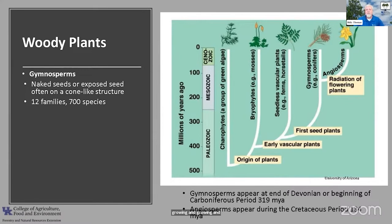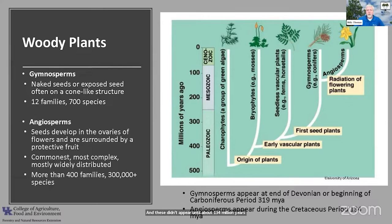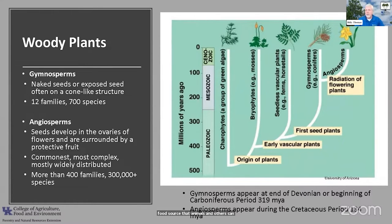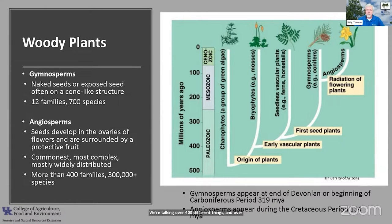Angiosperms didn't appear until about 134 million years ago, and that's a much bigger group. These seeds basically develop in the ovaries of the flowers of these flowering plants, and they put a protective coat around those seeds. Often that protective coat happens to be a food source that animals can be attracted to and help spread that seed around. We're talking over 400 different families and over 300,000 individual species grouped under the flowering plant category.